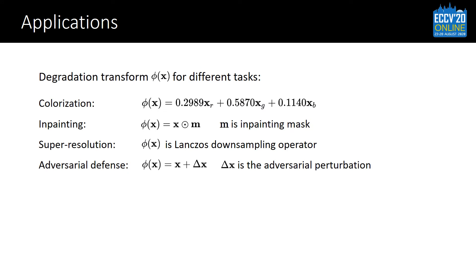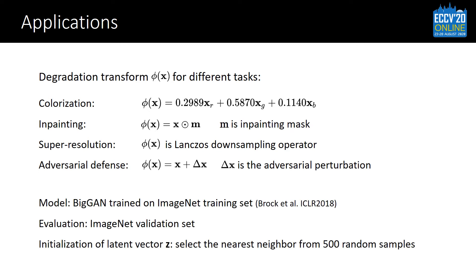We apply our method on several image restoration tasks, including colorization, inpainting, super-resolution, and adversarial defense. These tasks differ in the degradation transforms. We use BigGAN trained on the ImageNet training set as our model, and evaluate on the validation set. For each image, we initialize the latent vector by selecting the nearest neighbor of the target image from 500 random samples.